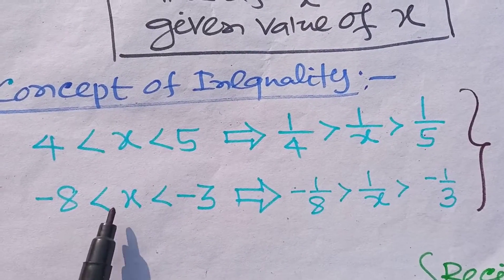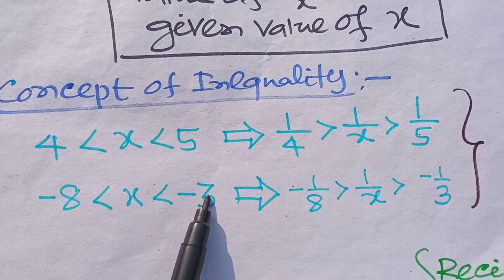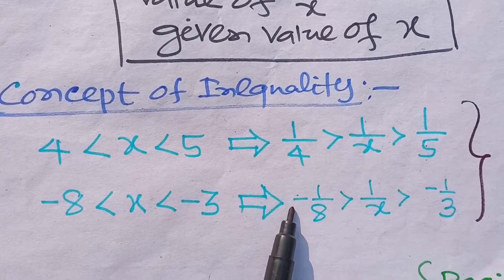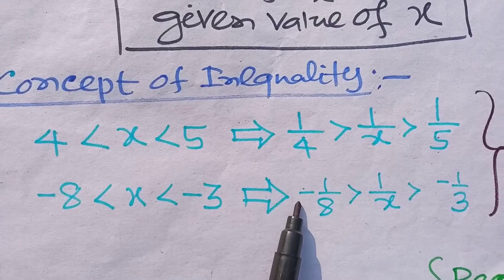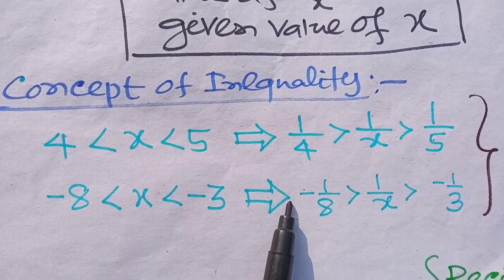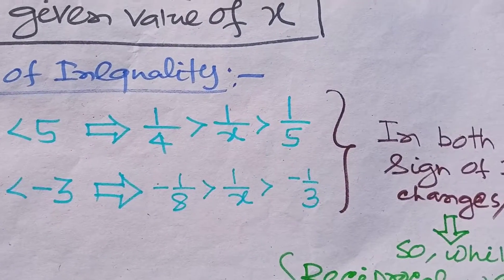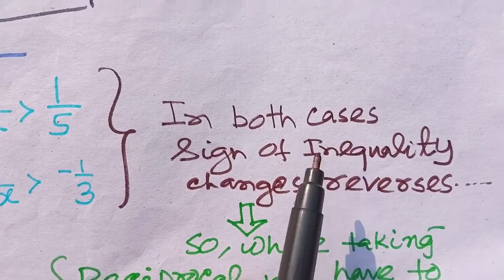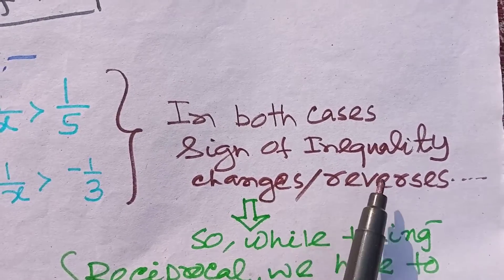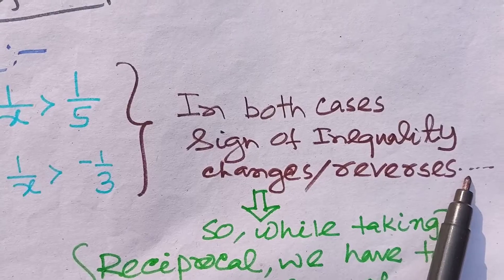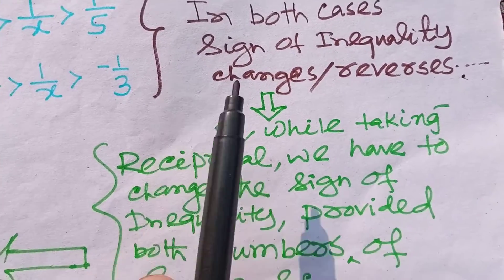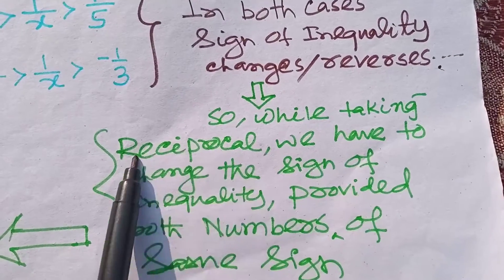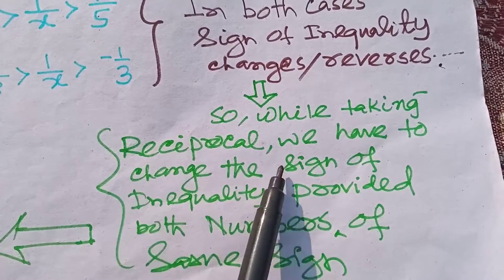Similarly, if x belongs from -8 to -3, then 1/x will belong from -1/3 to -1/8. That means whenever we are taking the reciprocal, we have to reverse the sign of inequality. So in both cases, the sign of inequality changes or gets reversed.